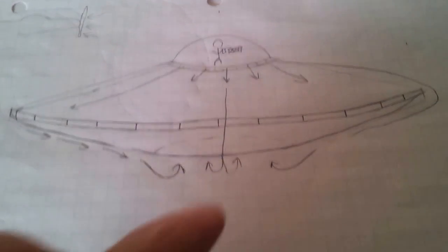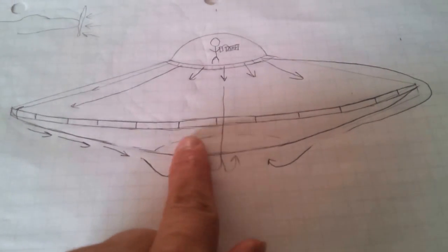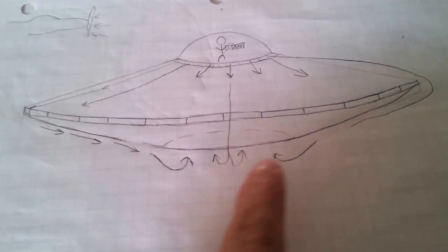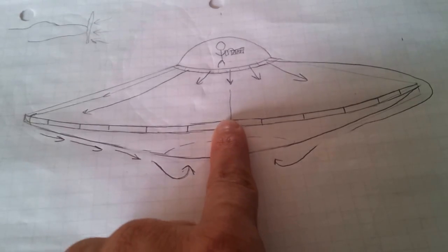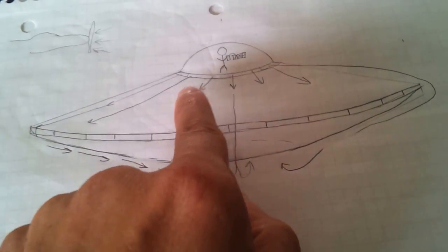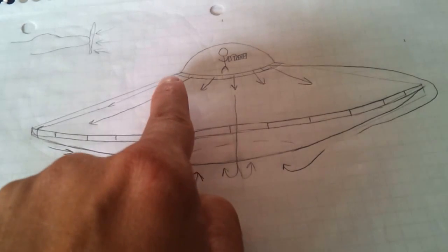Now the action is the Tesla turbine is spinning in here with electromagnets along the edge, getting it to spin. Therefore, it's sucking the air in.